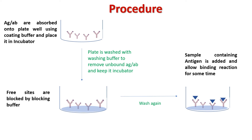There may be empty spaces in the well where no antibodies are present. These spaces need to be blocked, otherwise non-specific detection antibodies may bind there. Keep this plate in the incubator again to allow blocking properly. After an hour, take out the plate and wash it with washing buffer. Now the sample containing antigen is added to the plate well. If the antigen has a specific region against the antibodies, an antigen-antibody complex will be formed.